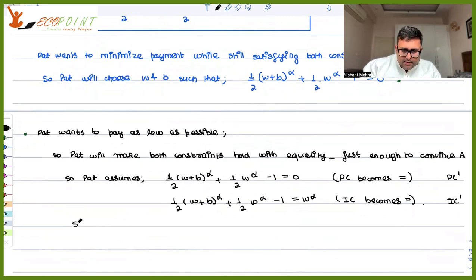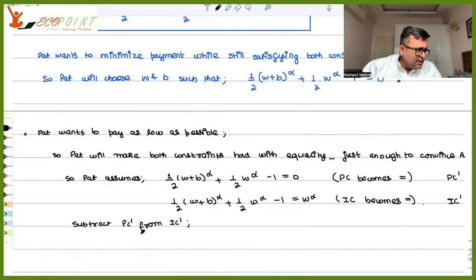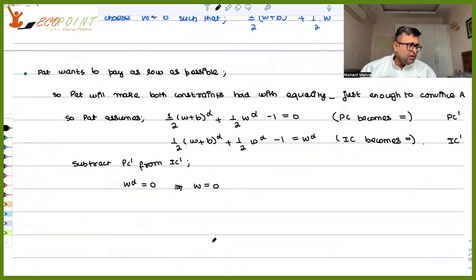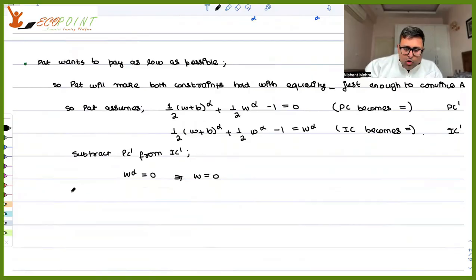You can subtract PC-dash from IC-dash. Once you do that, you get W to the power alpha equals zero, which means W equals zero. Think about it — the optimal wage is zero. If you ask Pat, he wants to give a wage of zero and only give the bonus.